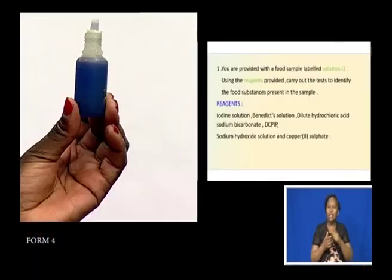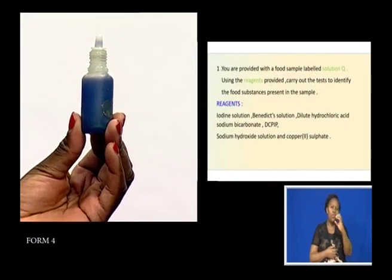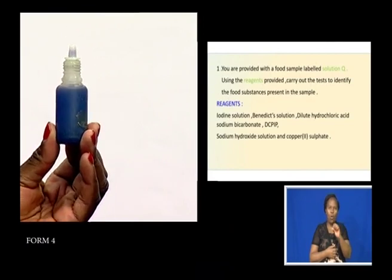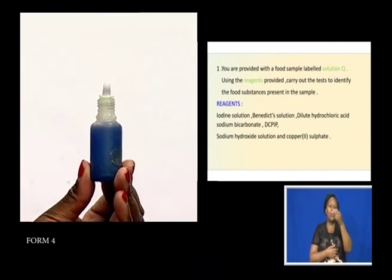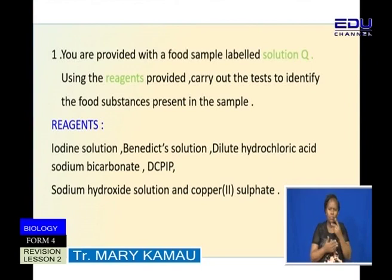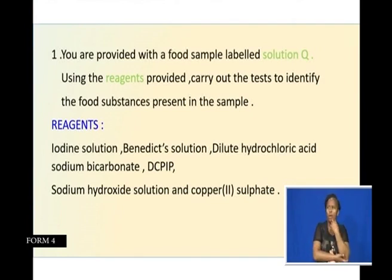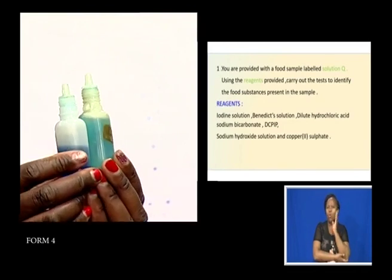And then we have DCPIP — dichlorophenolindophenol. So dear student, if you look at those reagents, they all have different colors. Some of them look like they are close to each other, like Benedict solution and copper sulfate — both of them are blue in color, but you can see their blue colors are different.